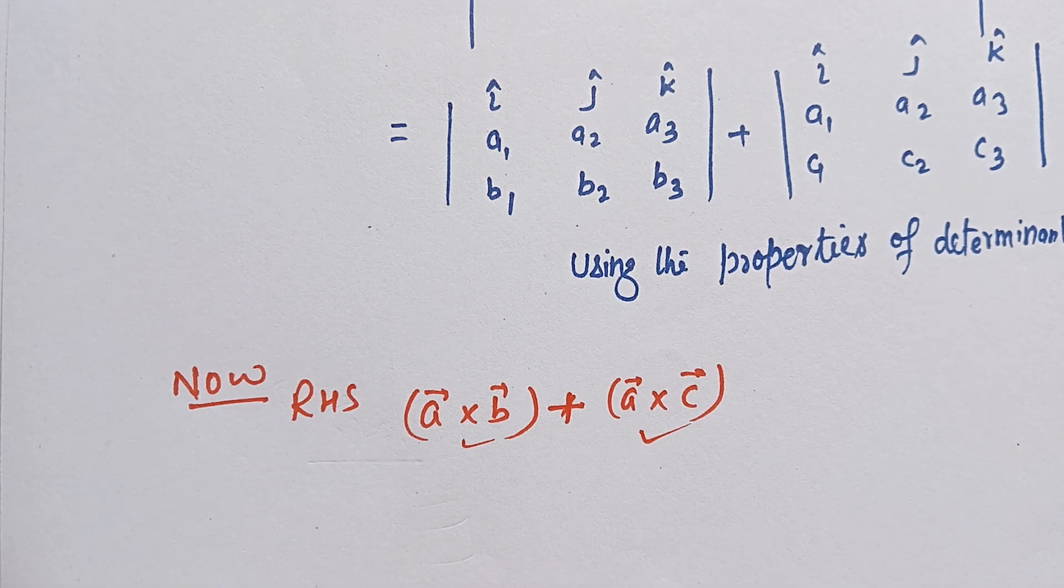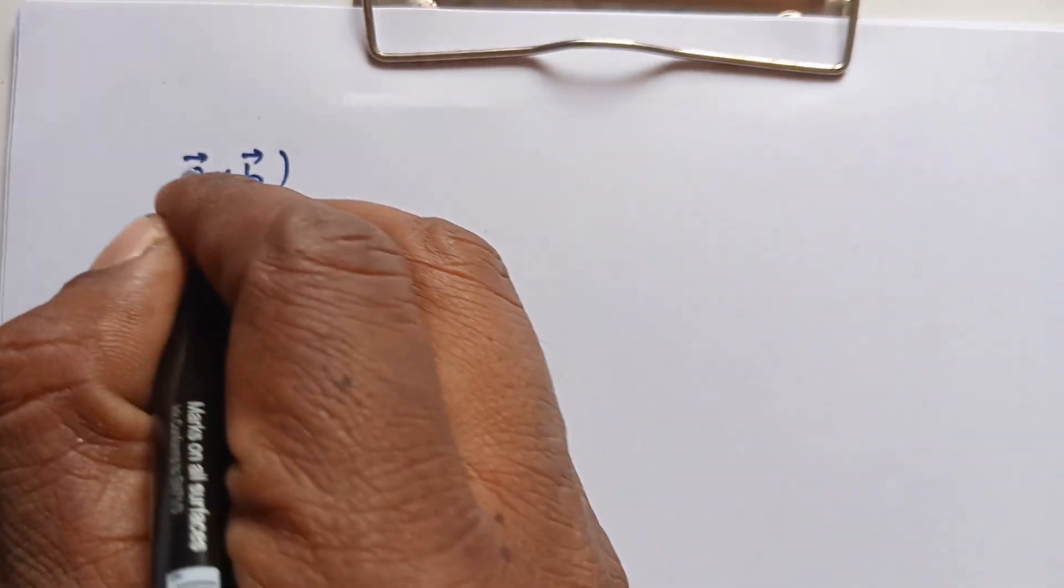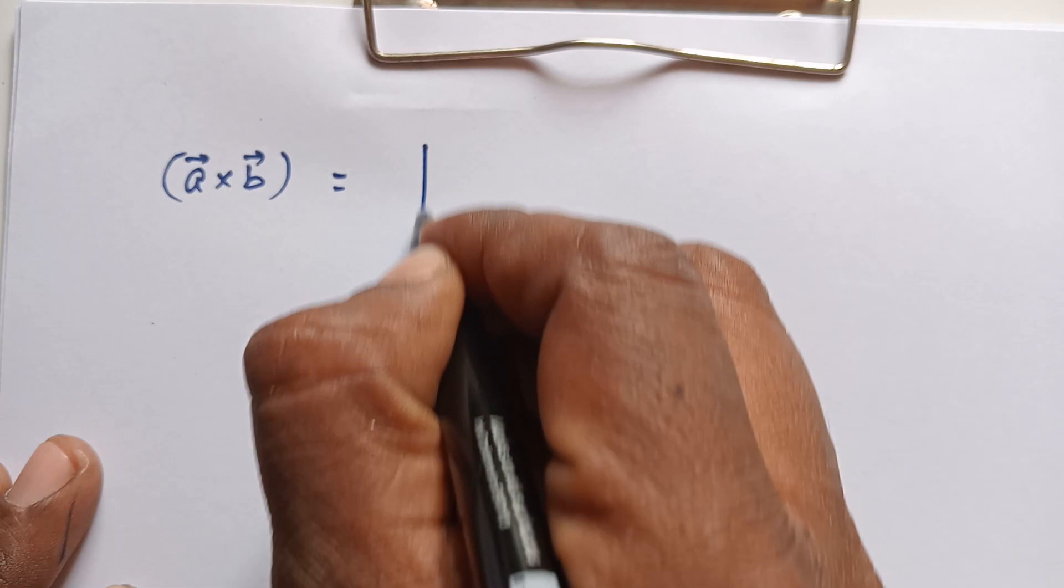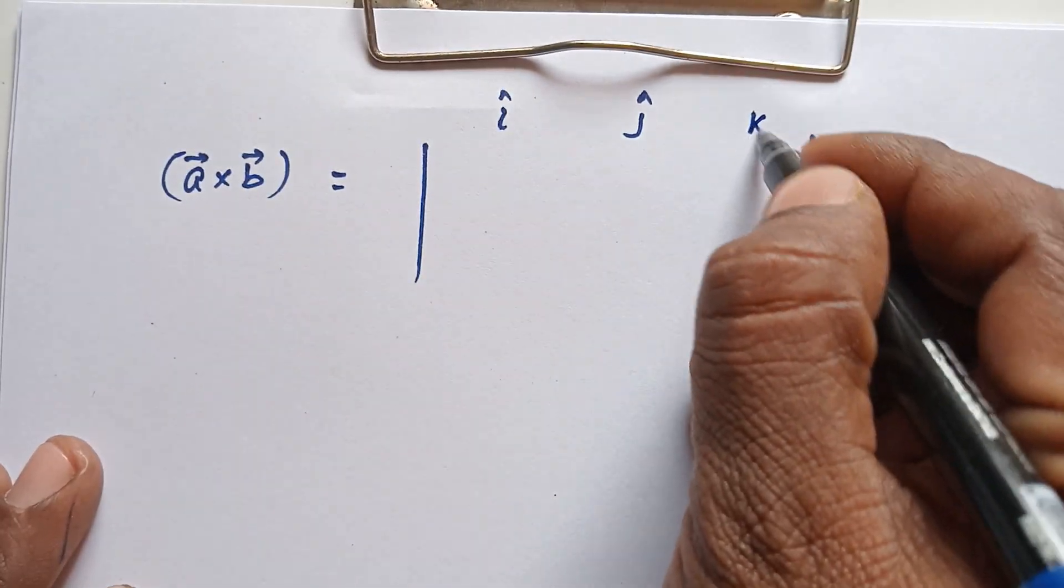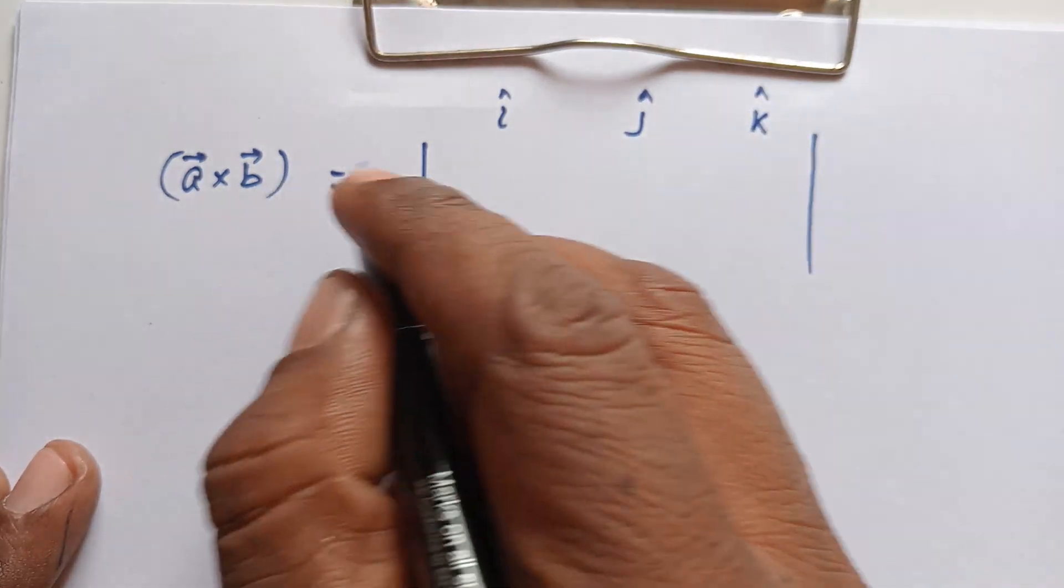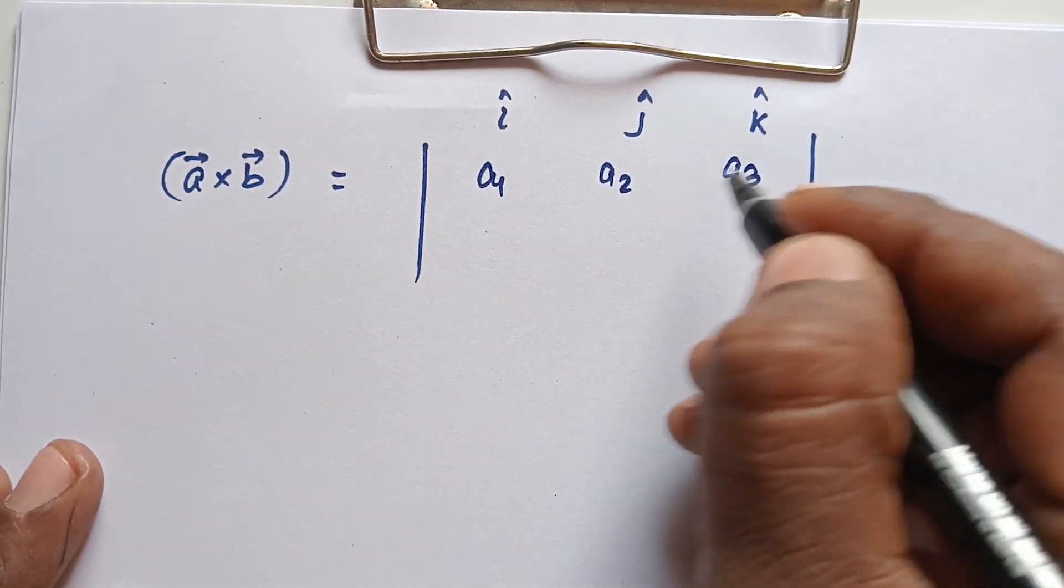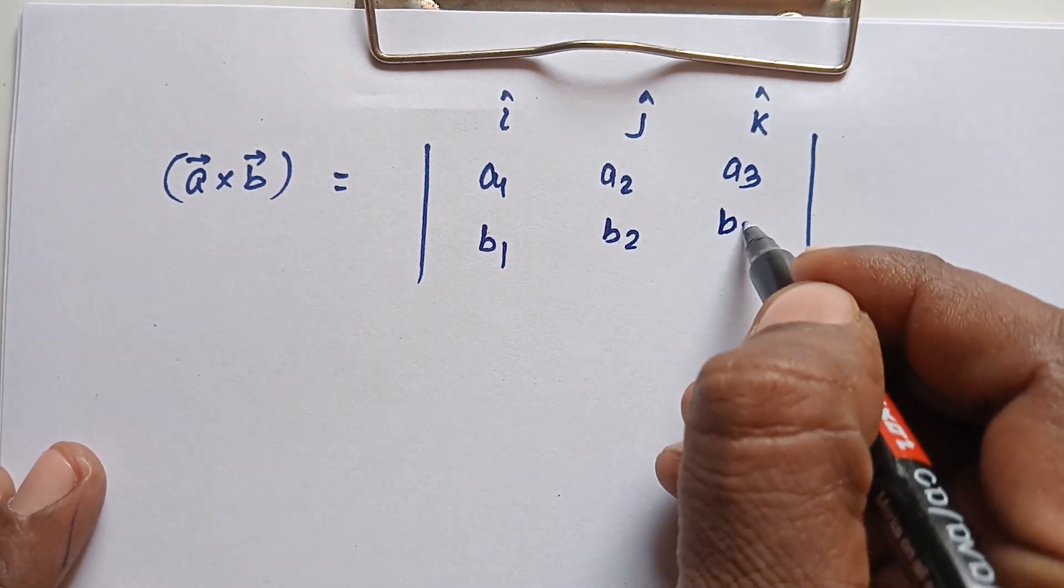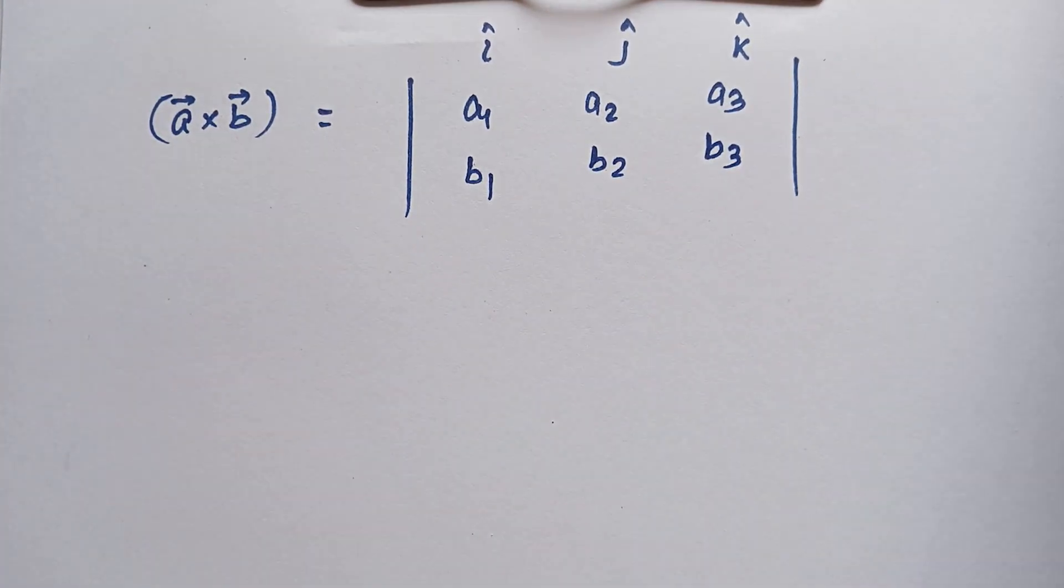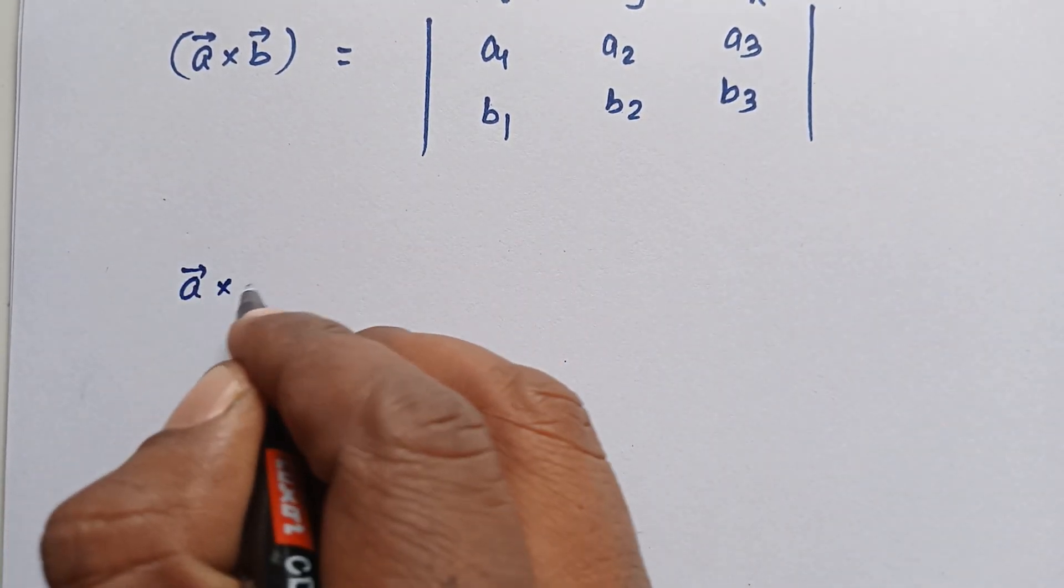Let's see A×B. So for A×B we write the determinant: î, ĵ, k̂; A has become a1, a2, a3; and B has become b1, b2, b3. That's A×B.